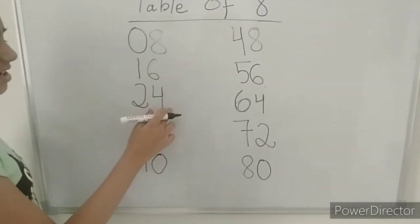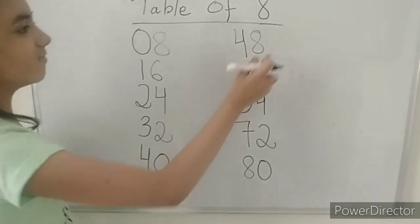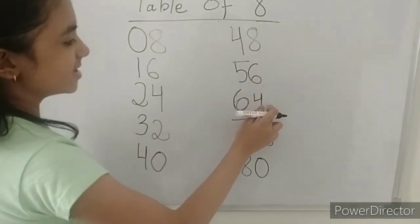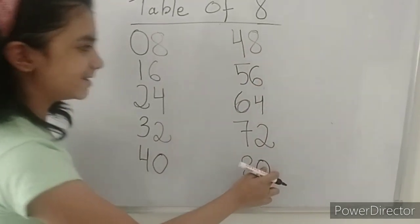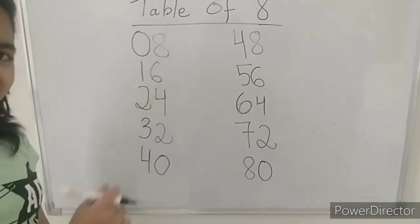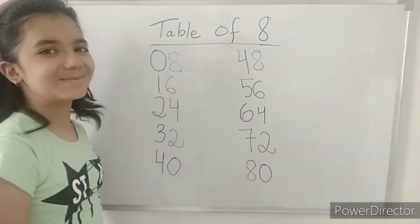The table of 8 is: 8, 16, 24, 32, 40, 48, 56, 64, 72, and 80. This was also very easy!